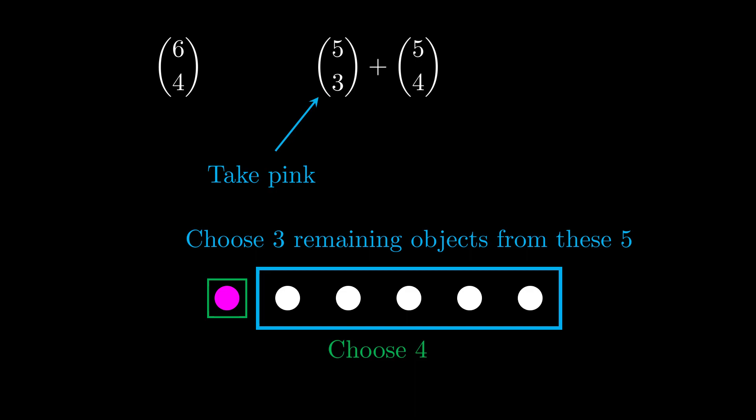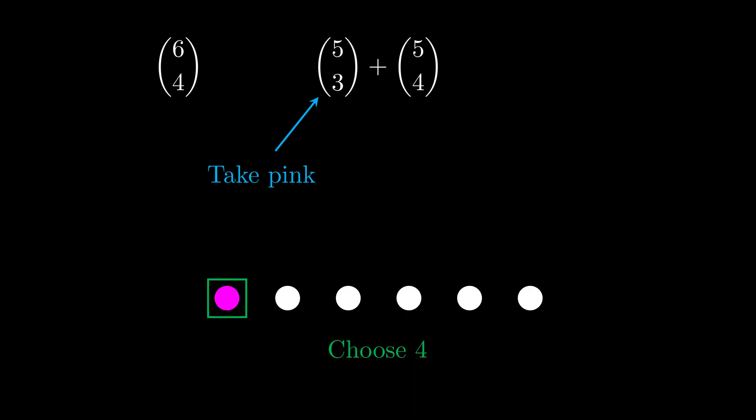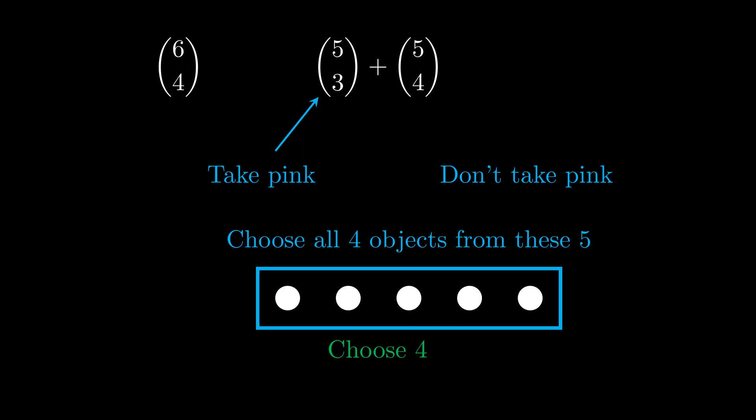Now, in any choice of 4, I either take the pink one or I don't take the pink one. So what if I don't take the pink one? That means it may as well disappear. And I need to choose all my 4 objects from these 5. And so that must correspond with this number here, 5 choose 4.